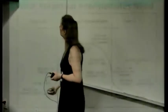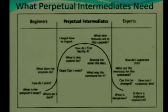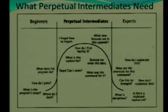Let's take a look at our bell curve graph and look at some questions that beginners, perpetual intermediates, and experts might ask, to help illustrate what each type of user needs. For beginners, common questions are: What's the program scope? Where do I start? How do I print? What does this program do?